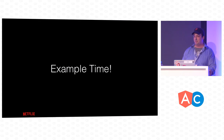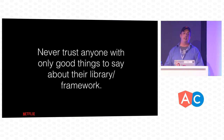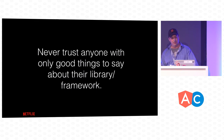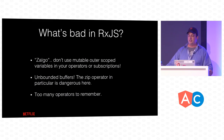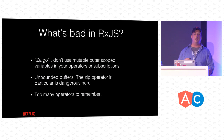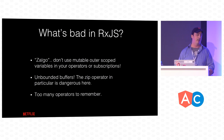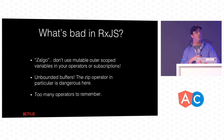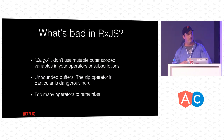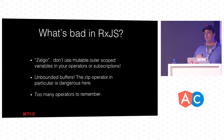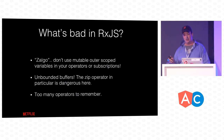Wrapping up with the bad in RxJS — never trust anyone with only good things to say about their library. The top pitfall is Zalgo: this occurs when you have a function that executes sometimes synchronously and sometimes asynchronously. Observables execute as fast as they can. If you have an observable over an array, subscribe will execute synchronously. If it's over something async — which is more likely and more recommended — it executes asynchronously. It can bite you.